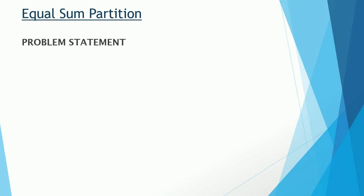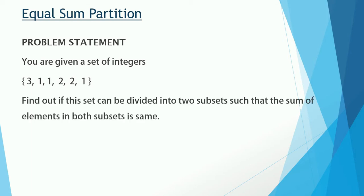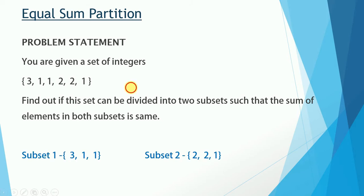You are given a set of integers: 3, 1, 1, 2, 2, 1. You need to find out if this set can be divided into two subsets such that the sum of integers in both subsets is the same. Subset 1 has integers 3, 1, 1 and subset 2 has 2, 2, 1 — both sum to 5. This is the equal sum partition problem.